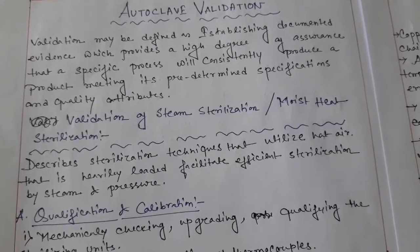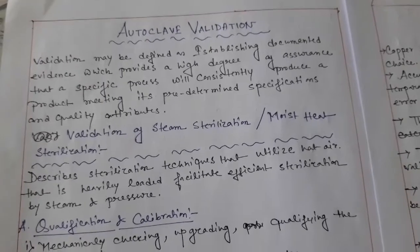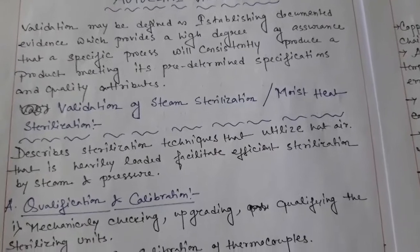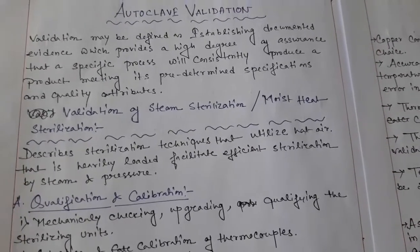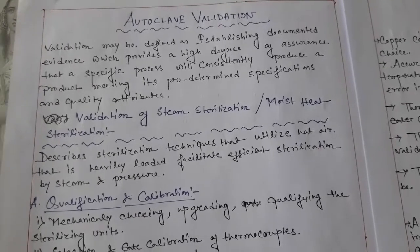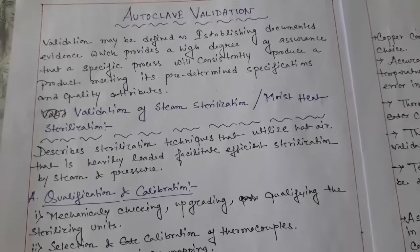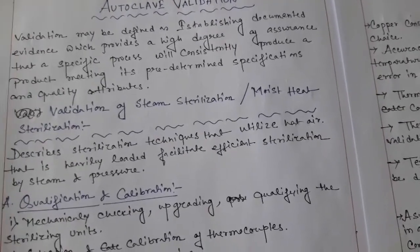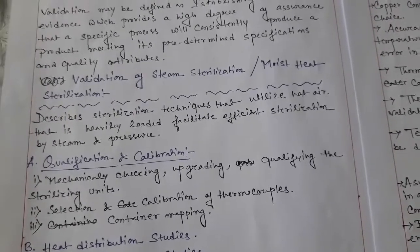Validation of steam sterilization or moisture sterilization — autoclave is included into moisture sterilization or steam sterilization. This describes sterilization techniques that utilize hot air, heavily facilitated by efficient sterilization by steam and pressure. Mainly, autoclave contains pressure and steam, and in this case the steam acts as the main function under pressure.